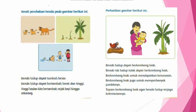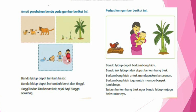Di sini ada gambar pohon pisang. Awalnya tumbuh tunas kecil, lalu membesar dan tumbuh menjadi tinggi. Begitu pula dengan manusia. Manusia awalnya bayi, lalu bisa merangkak, bisa berdiri, kemudian bisa berjalan seperti kita. Inilah ciri benda hidup, yaitu mengalami pertumbuhan dari kecil menjadi besar.